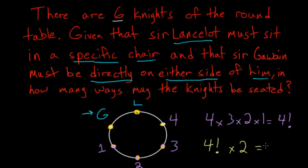Four factorial is just 24. So we have 24 times 2, which is 48. So there are 48 different ways that these knights can be seated.